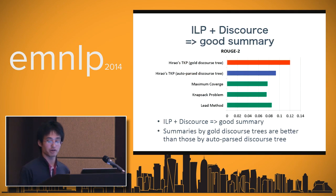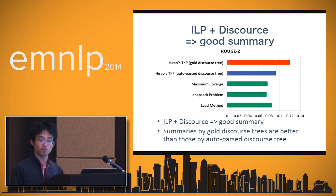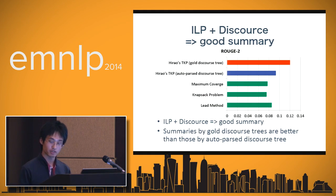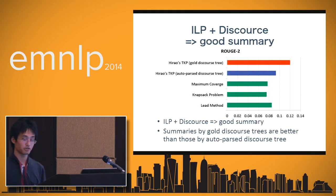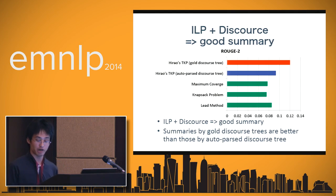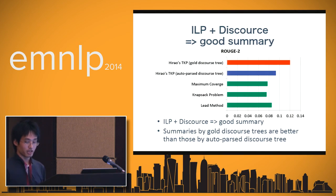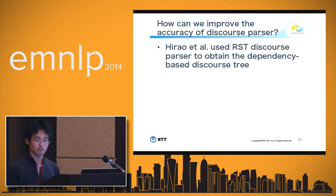This is the summarization result evaluated by ROUGE. The red part used the gold discourse tree and got the highest ROUGE score. The blue part used the automatically parsed discourse tree, and the green part does not use the discourse tree. From this result, we can find two things: first, the combinatorial optimization plus discourse method generates a high-quality summary; and second, summaries generated by gold discourse trees are better than those by automatic discourse trees. This implies that summary quality greatly depends on the accuracy of the discourse parser.